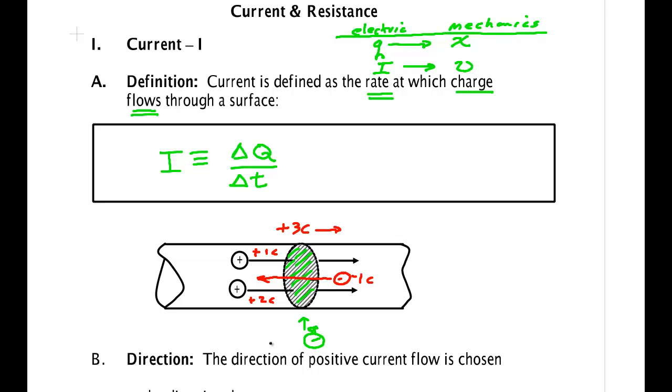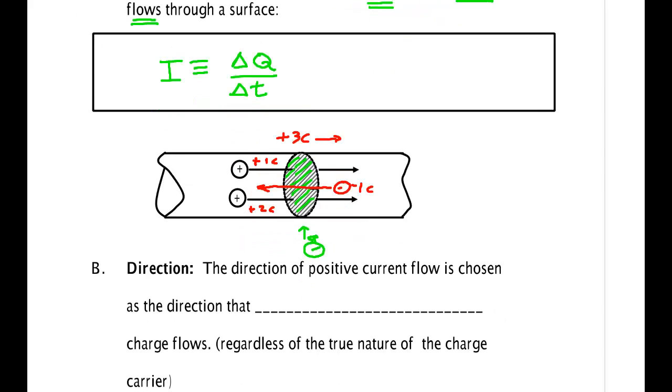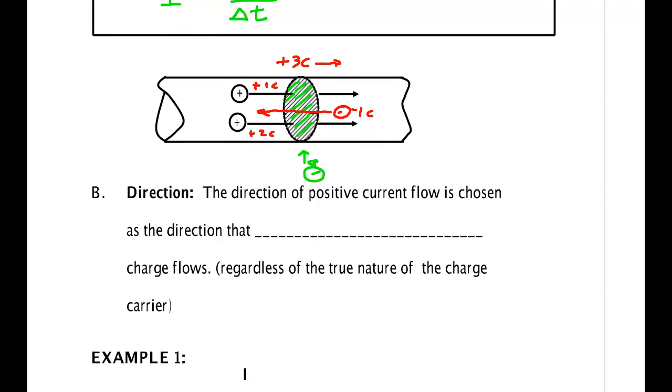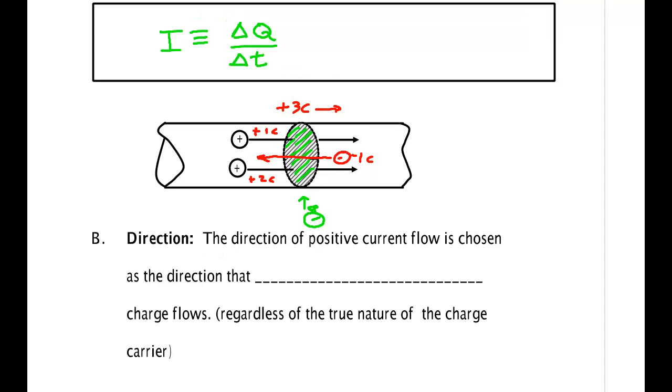And just like they chose arbitrarily positive charge to be one material rubbed on glass, and negative a different material rubbed on it, they did kind of an arbitrary thing here. So for electrical engineers and physicists in particular, we define the direction of positive current flow to be the direction that positive charge flows.